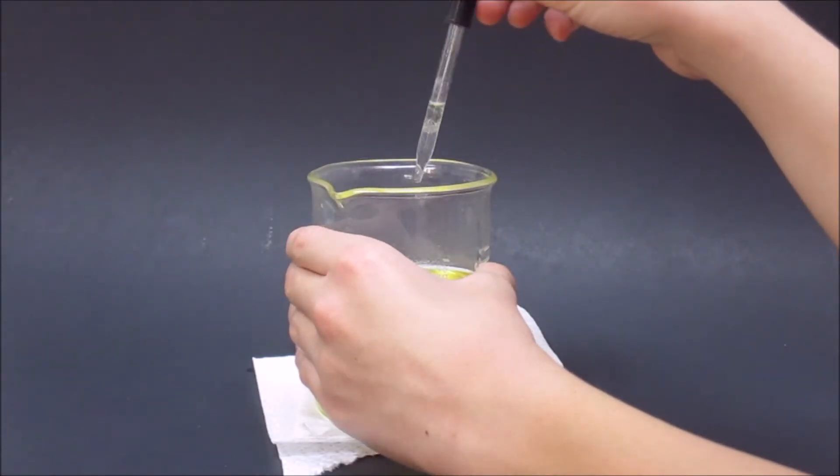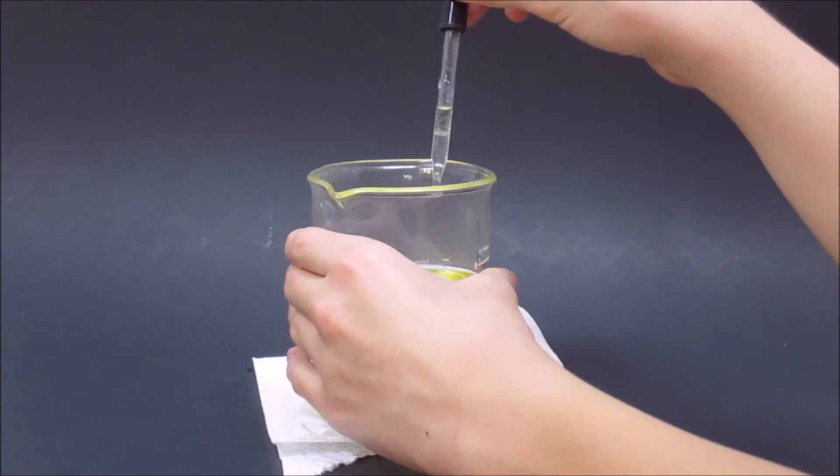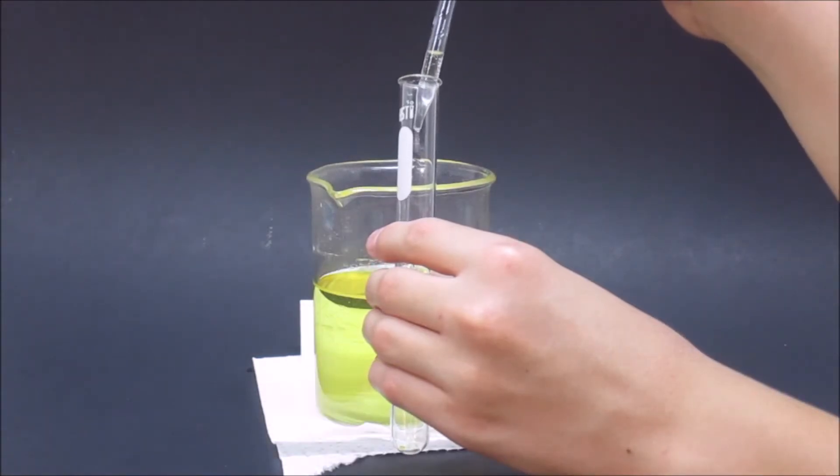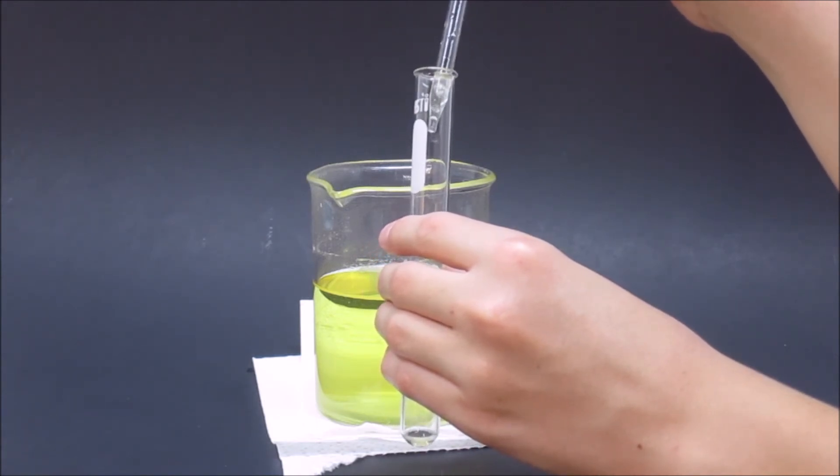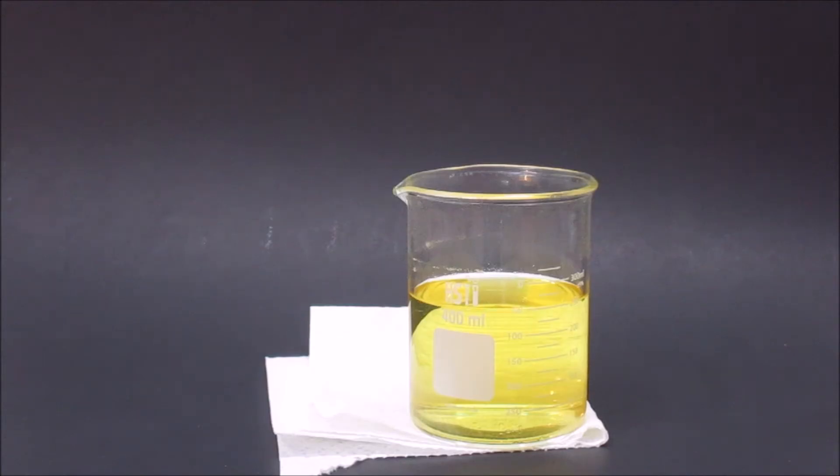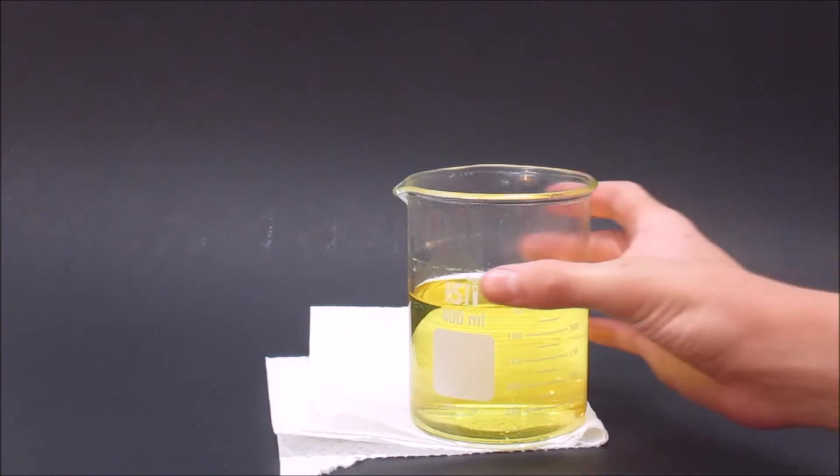Then I removed the chloroform from the beaker. I did this by extracting with a pipette and then putting it into a test tube. Then I put the rest of the mixture to the side.